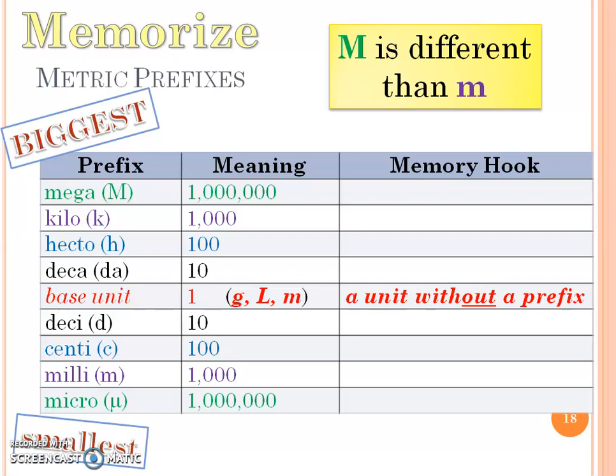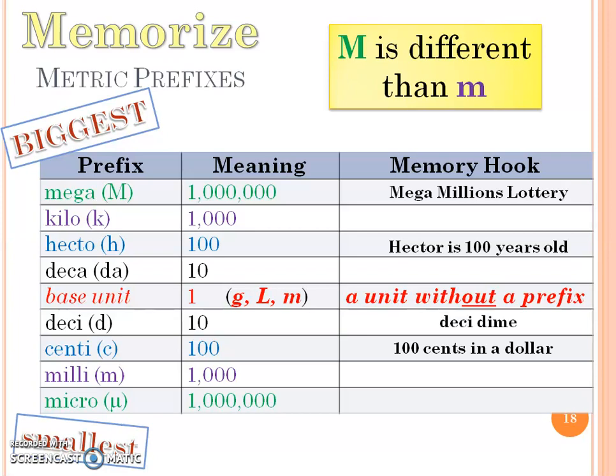Hopefully at this point you've come up with some, but I'll give you some others. We've already talked about 100 cents in a dollar. Notice the hundred cents are smaller than a dollar. How about something like the mega millions lottery? Mega to me means big, millions of dollars there. Hector to me is like an old man, Hector 100 years old. And deci, think about that dime is smaller than the dollar. So deci dime. Maybe you've come up with other things. Try to come up with some memory hooks to memorize what these prefixes mean.